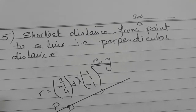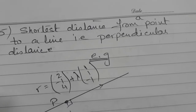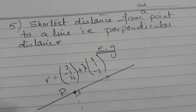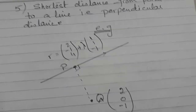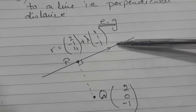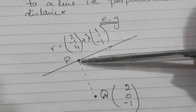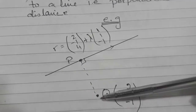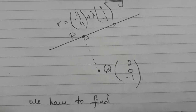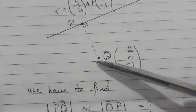The last concept we will study in the vector equation of a line is the shortest distance from a point to a line — and we all know the shortest distance is the perpendicular distance. Here I have taken an example: the point is given, and the line is given. I need to find the perpendicular distance, naming the foot of the perpendicular as P. To find the shortest distance, we find the magnitude of vector PQ.